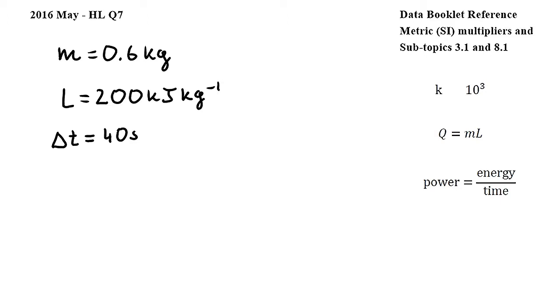I wrote down some key information below that is given in the question. The mass of the liquid is 0.6 kg, the specific latent heat of vaporization of the substance is 200 kJ per kg, and I wrote down that delta t, the change in time, is 40 seconds.